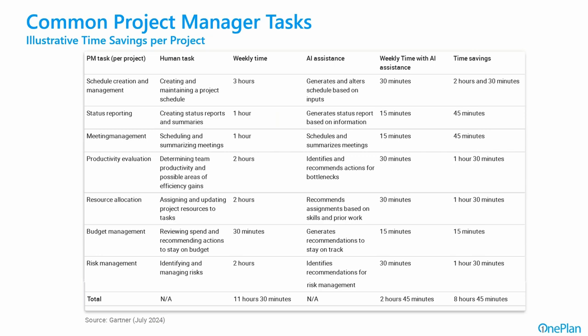The Gartner Group did a study on time savings per project moving forward that we can anticipate. For example, schedule creation and management with a typical weekly time of three hours could be reduced to 30 minutes — a savings of two and a half hours per week. These different areas aren't about removing roles, but changing them — taking more mundane administrative tasks, making us more efficient, and freeing us up for higher-value activities: more mentoring, optimization, maturing the organization, and providing more value rather than administrative work.